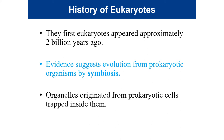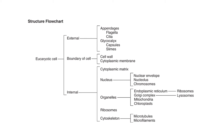Endosymbiotic theory proposes that organelles may have originated from prokaryotic cells trapped inside larger prokaryotic cells that ingested but did not digest them as a food source. A dichotomous chart lists all the different structures a eukaryotic cell could possess, covering their structure, basic functions, and locations.